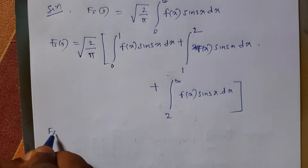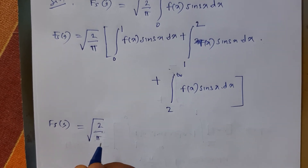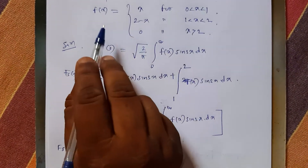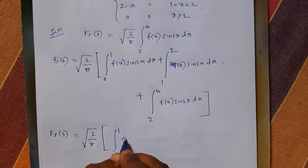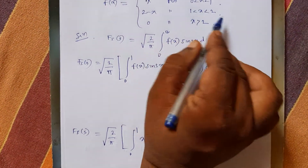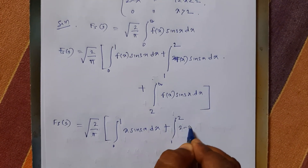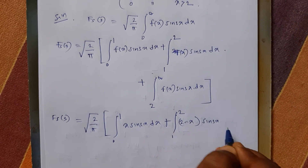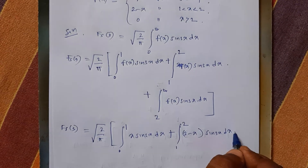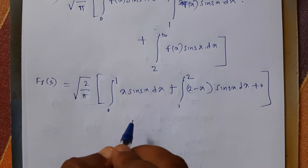Therefore F_s(s) is equal to square root of 2 upon pi: integration from 0 to 1 where f(x) equals x, so that is x into sine(sx) dx; plus from 1 to 2 where the value of f(x) is (2 minus x), so (2 minus x) into sine(sx) dx; and between 2 to infinity the function f(x) is 0, so plus 0 — anything times 0 is 0.